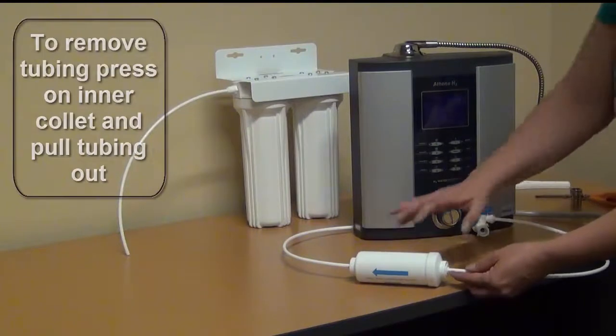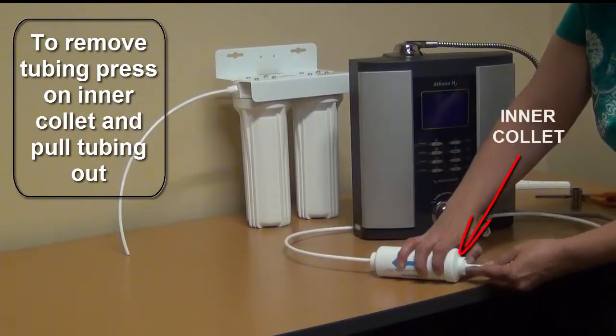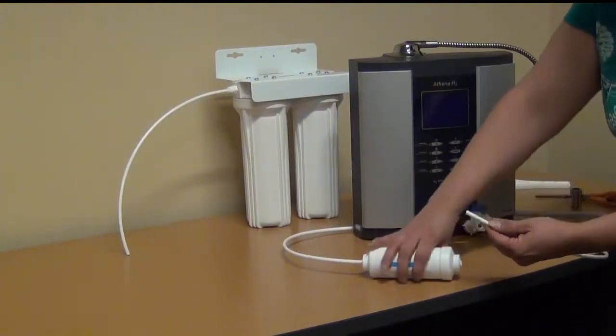Remove the tubing by pressing the collet while you pull the tubing out. Make sure that the cut on the tubing is very straight and clean.